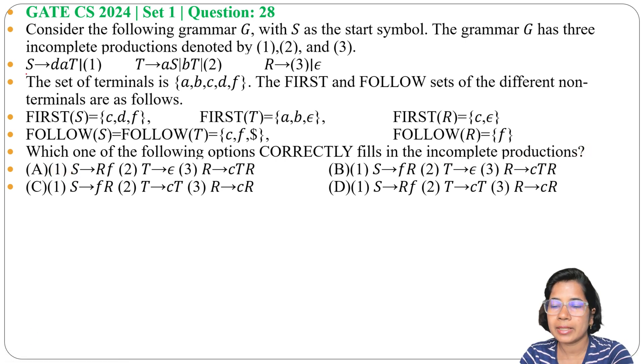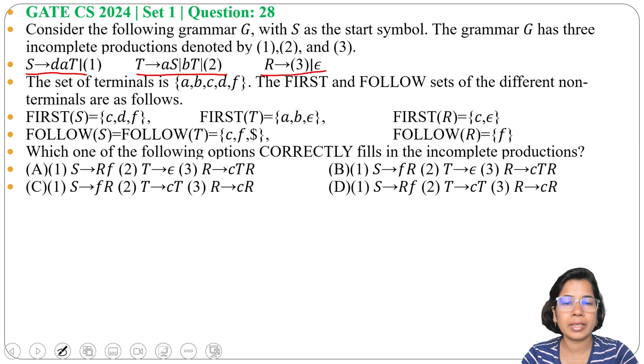So your grammar is S→dAT or 1, T→aSbT or 2, R→3 or Epsilon. In every option, some productions are given for 1, 2, and 3. So what I will do is I will write these option productions in place of 1, 2, and 3.